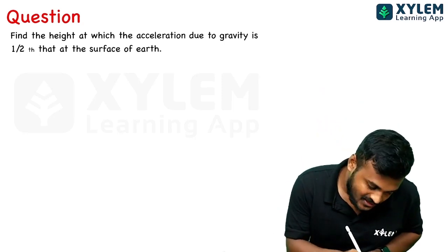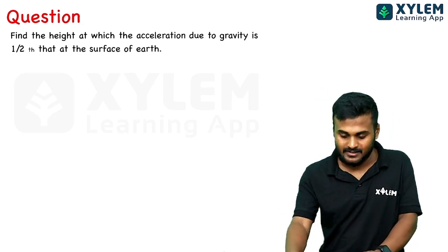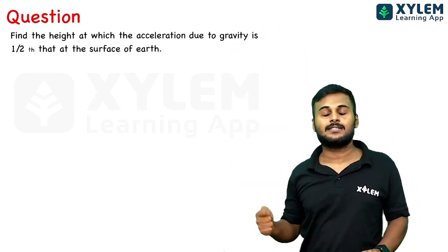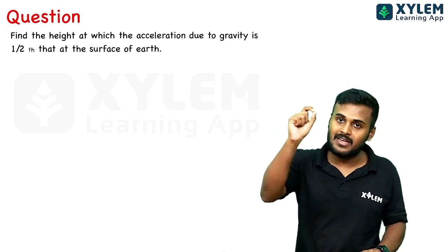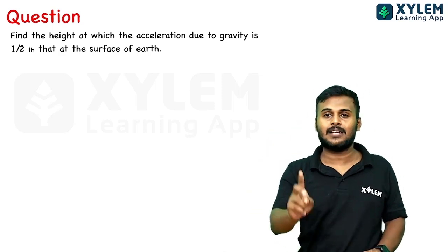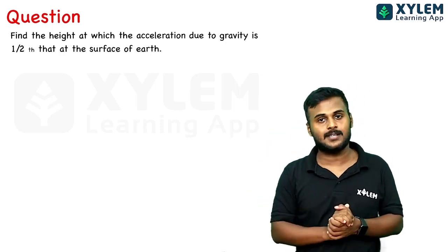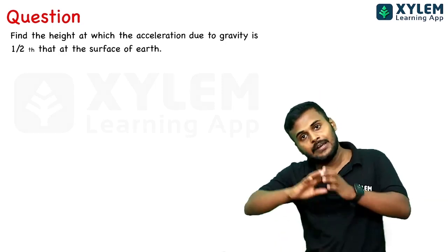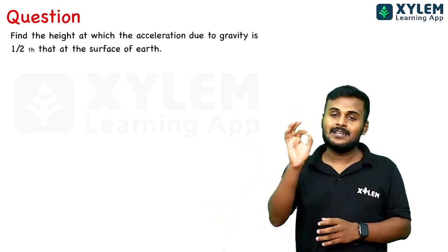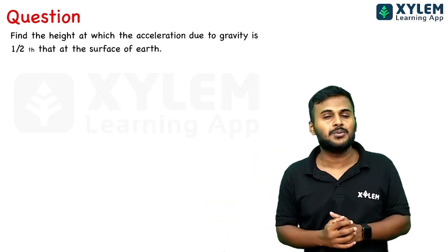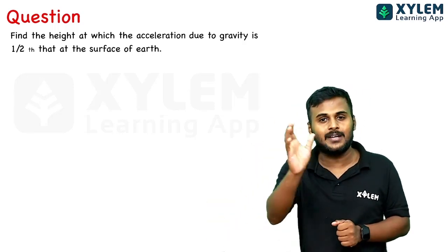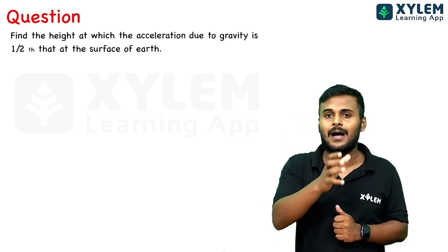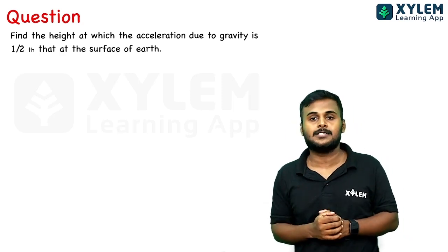Acceleration due to gravity varies with altitude. We have two equations. The first equation is g' is equal to g into 1 minus 2H by R. That's one equation.